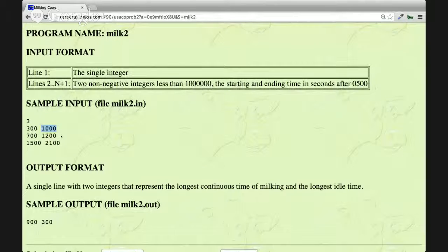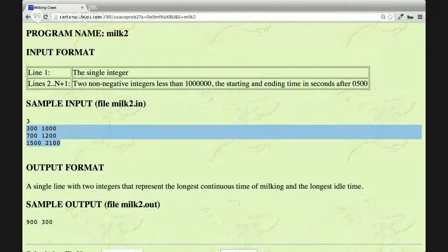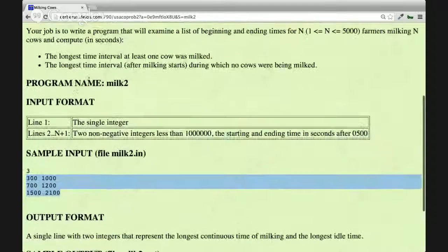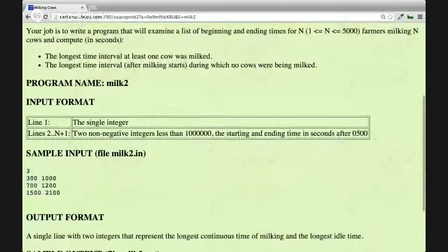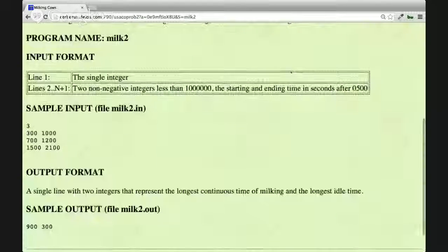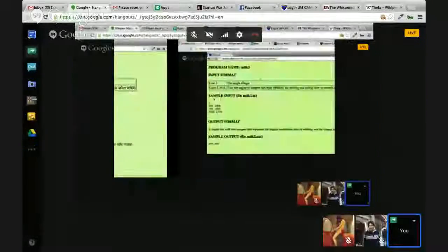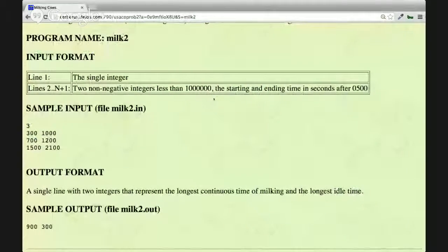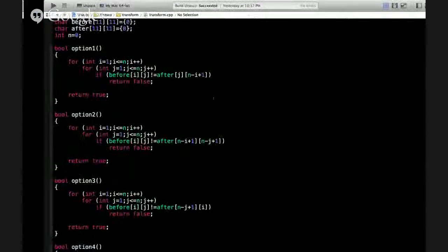So what our job is, is counting the longest continuous time between the inputs and the longest interval where there is no cow being milked. So we just need to know the longest time interval for these two sessions. My algorithm is quite simple.